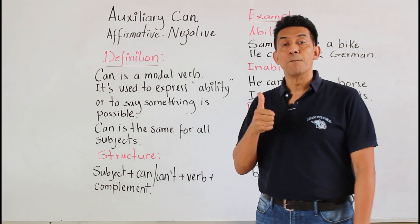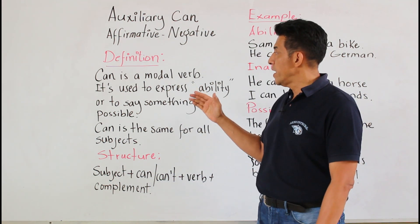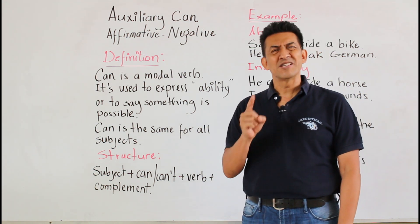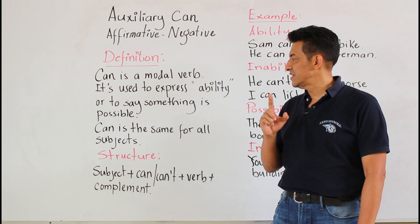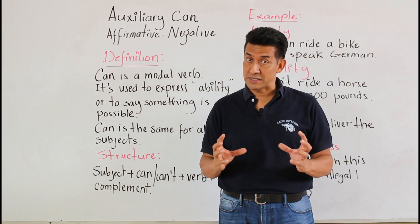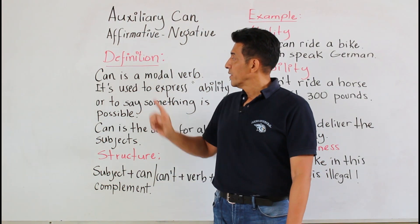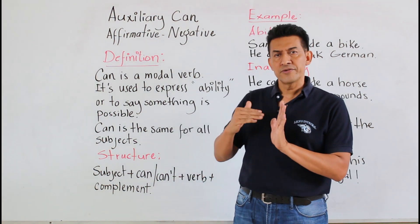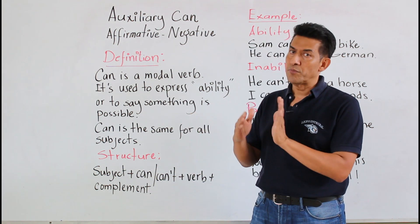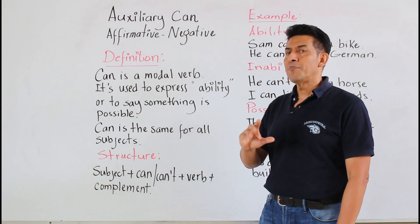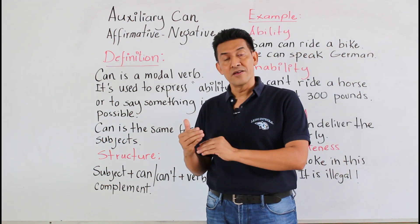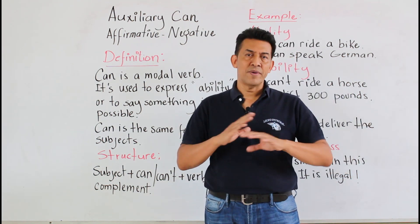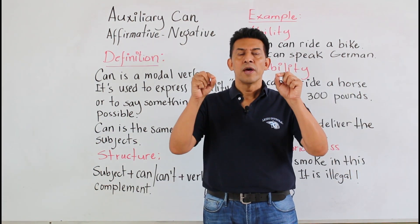Can is a modal verb. It's used to express ability or to say something is possible. Can is the same for all subjects. Can es un verbo de modo que indica que es de ayuda al verbo original. Se usa para expresar habilidades o para decir que algo es posible. Can se usa para todos los sujetos.